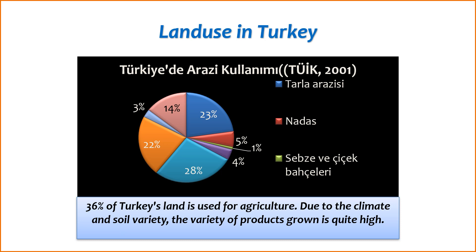9. Research and education — Agricultural research institutes: research institutions and universities conduct studies to develop improved agricultural practices, crop varieties, and soil management techniques. Extension services provide farmers with information and training on best practices. The use of soil in agriculture is a dynamic and evolving aspect of Turkey's agricultural sector, reflecting efforts to balance productivity with environmental sustainability.